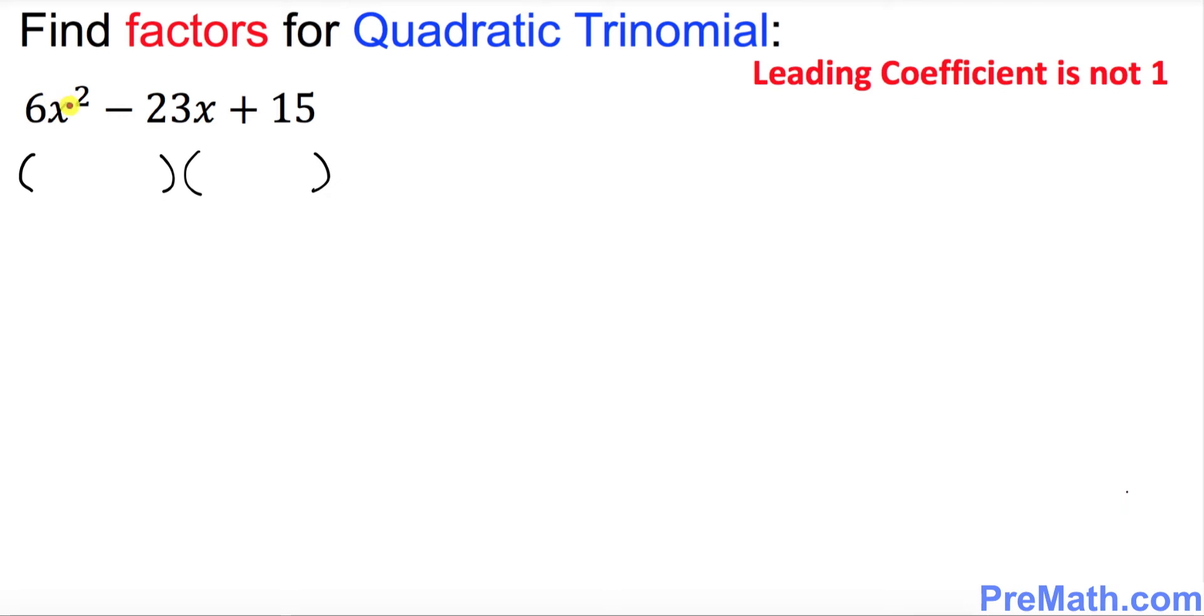Next, I want you to just look at this part only: 6x. Don't worry about this exponent, just disregard this exponent. Put down 6x in the first parentheses and put down 6x in the second parentheses.